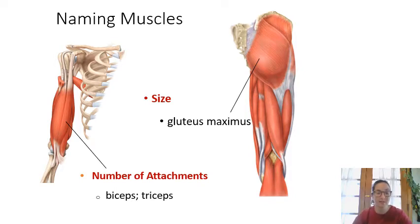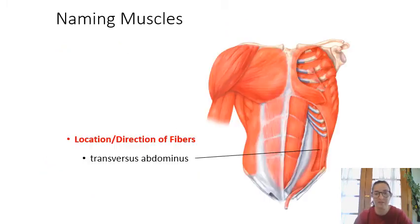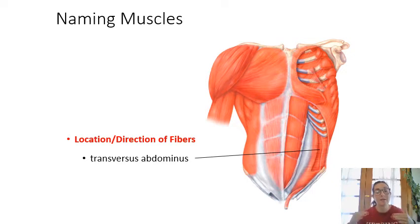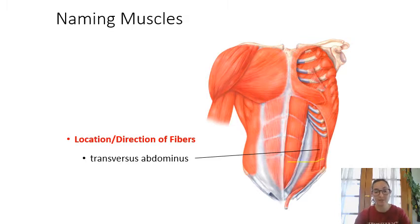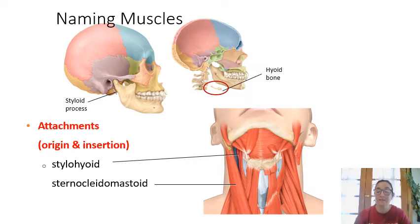Sometimes muscles are named after size — gluteus maximus means large, and gluteus medius and minimus are smaller. Sometimes they're named after the directionality of muscle fibers: transverse abdominis runs across the abdomen in a transverse direction. It's a very deep layer of muscle that goes all the way across horizontally.